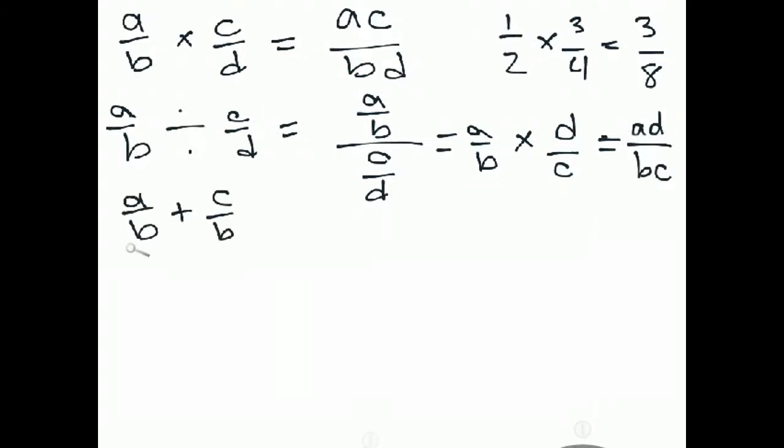If we have the same denominator, then all we need to do is add the numerators together. Think of it this way, if I have one fourth of a pizza, somebody gives me another fourth, how many fourths do I have? Well, I have two fourths, and we could reduce that to one half if we wanted to.